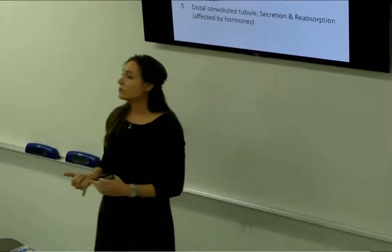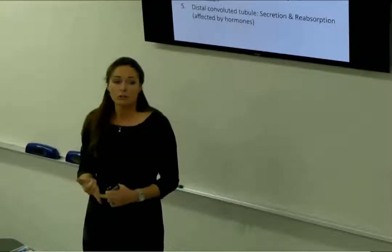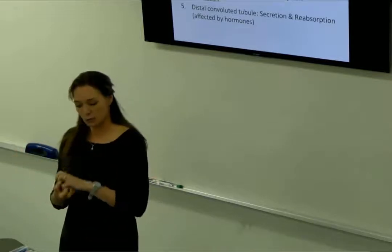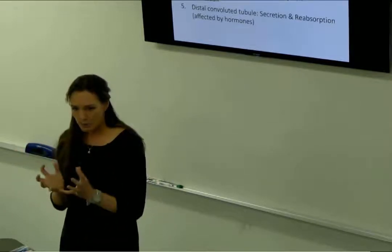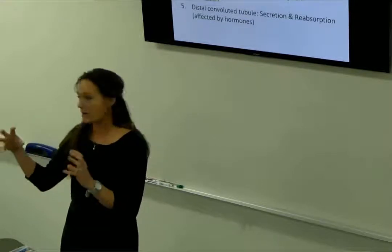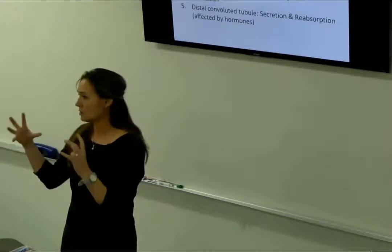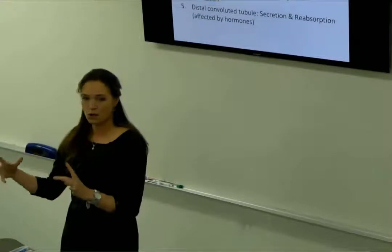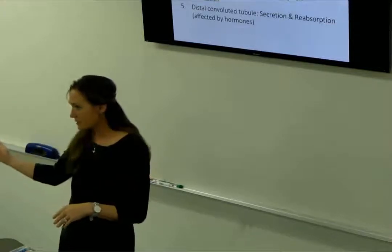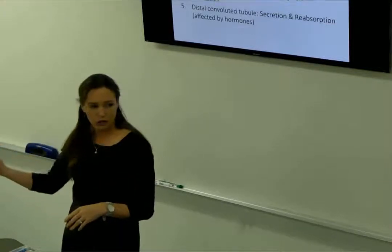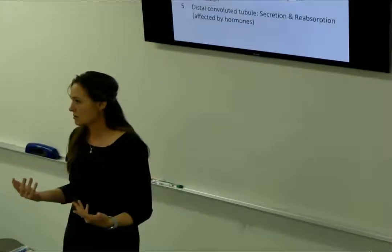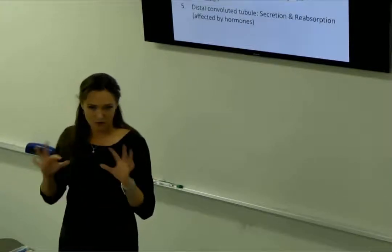The renal corpuscle, which is made of the glomerulus, is where filtration takes place — the glomerulus and the Bowman's capsule. Then the majority of reabsorption takes place immediately at the proximal convoluted tubule. What is in the proximal convoluted tubule that's different from the distal that increases surface area to maximize reabsorption? Microvilli.